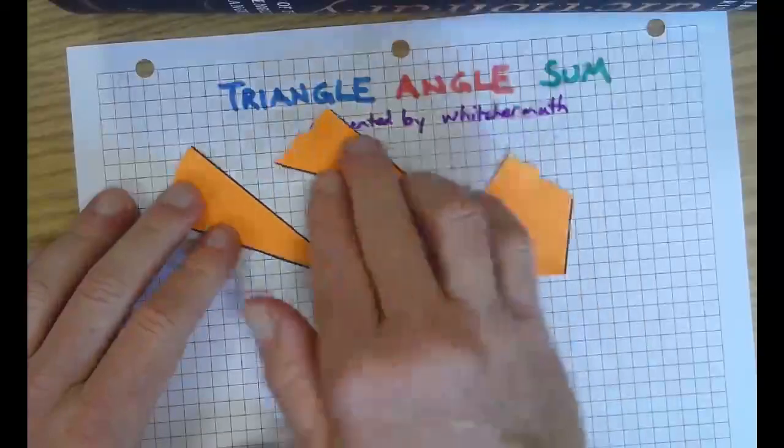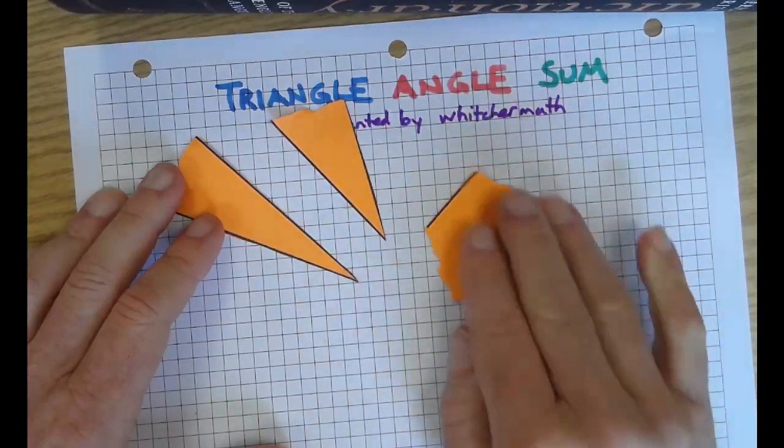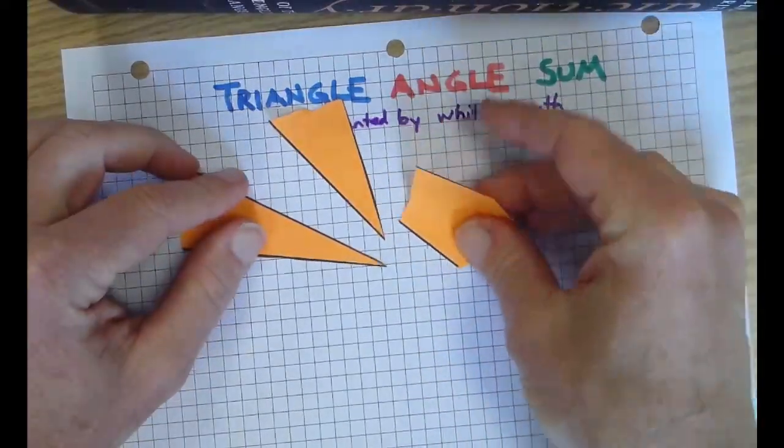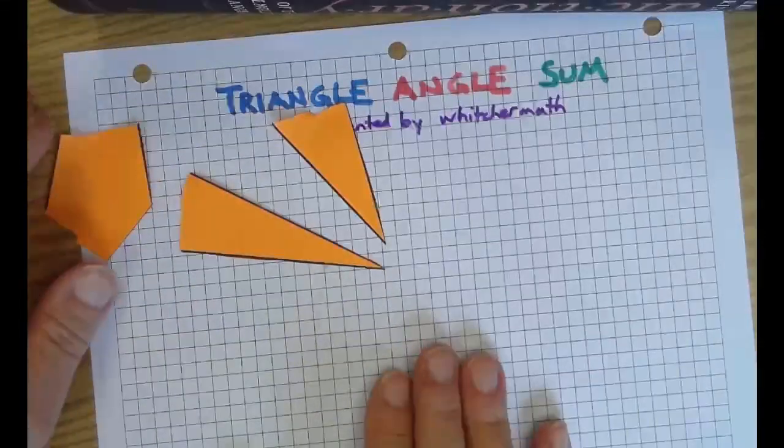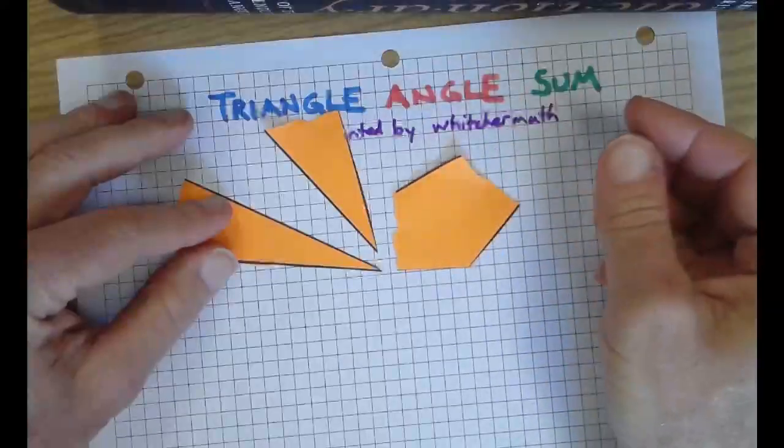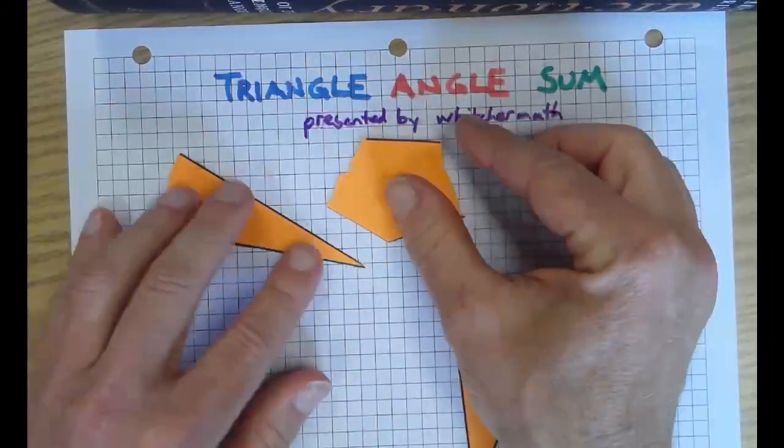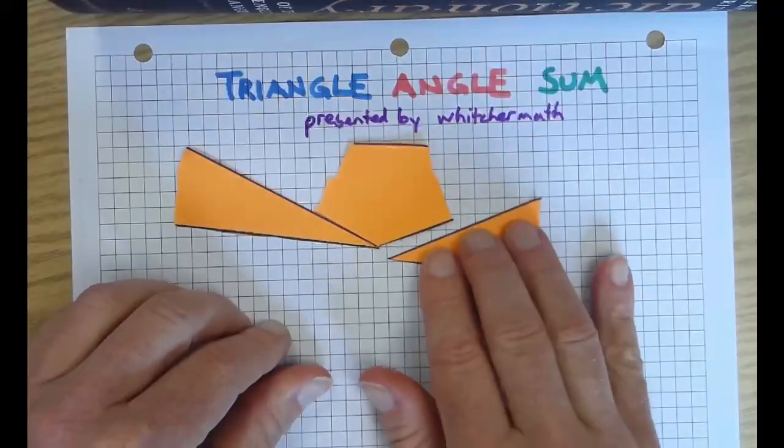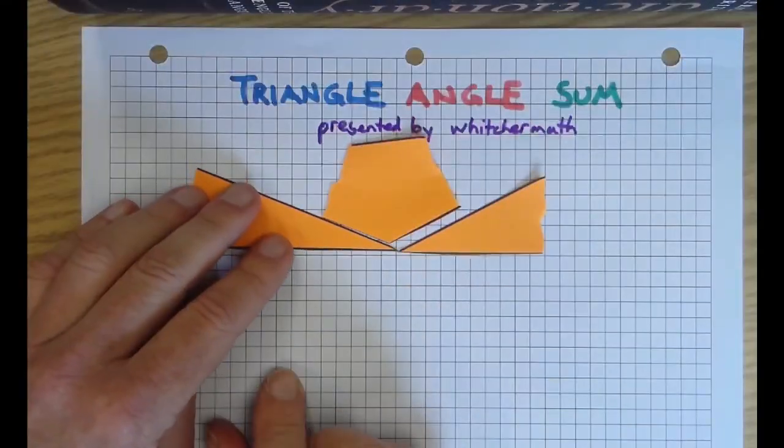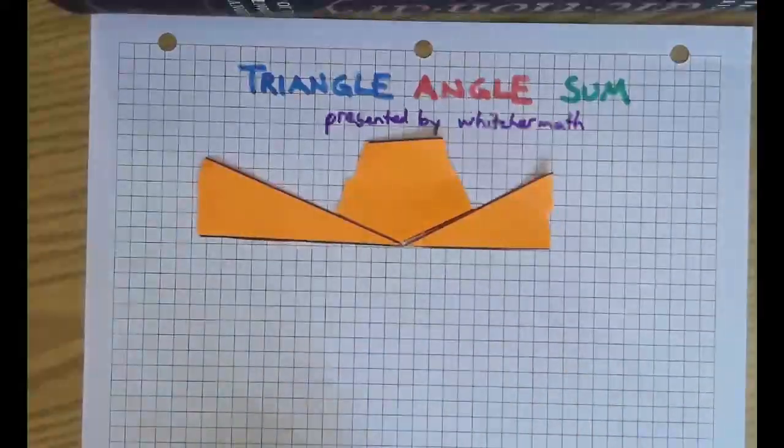We're gonna line up the corners. Not like that. I think I tore this corner by accident. Let's find out. Oh no, it's okay. The goal is we put the three corners together. Graph paper is great because we have a nice straight line, and put the three corners together and look what happens. Makes a straight line.